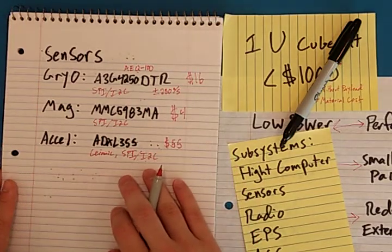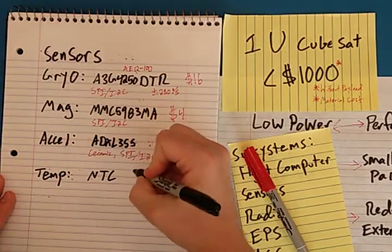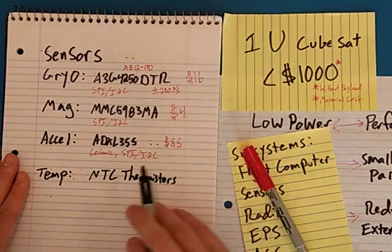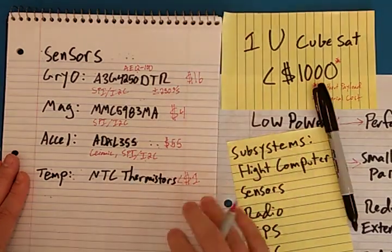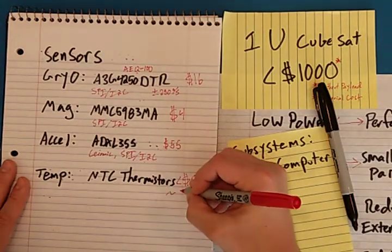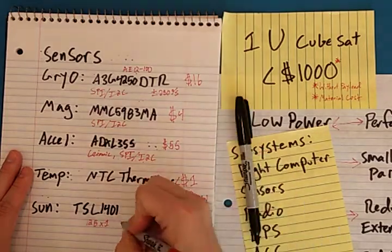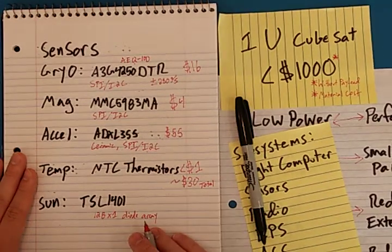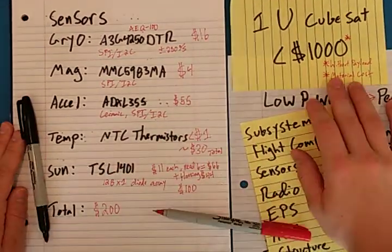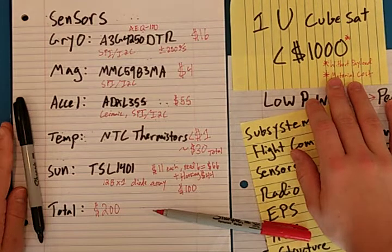For temperature sensors, I'll probably just end up using NTC thermistors. The advantage of this is that all I need are ADCs to be able to read in the thermistor output. I don't need to rely on another data bus. They are very cheap, but I'll probably end up using many of these, so it'll end up being roughly around $30 total. Now, sun sensors. I found a TSL1401, which is a 128 by 1 diode array. With the appropriate physical mounting, this will end up working as a directional sun sensor. I figure that I'll need six of these sun sensors, and I'm just rounding up to $100. In total, everything else comes out to $200.